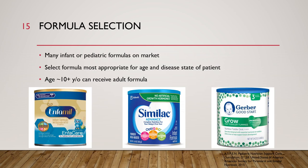For formula selection in enteral feeds, there are many formulas on the market. The goal is to select the formula most appropriate for the patient's age and disease state. Around age 10 to 12, pediatric patients can begin to receive adult formulas, so formula selection primarily applies to patients below that age.